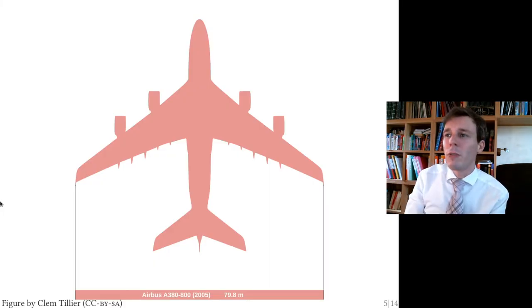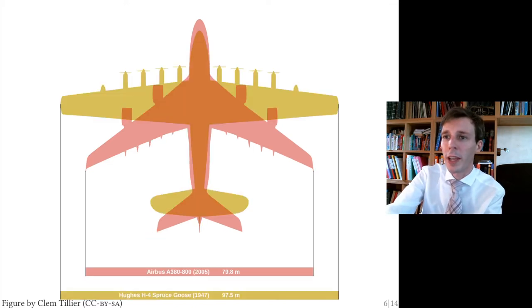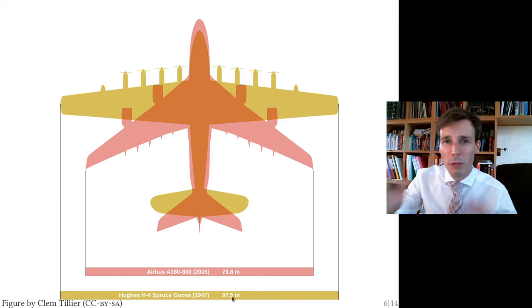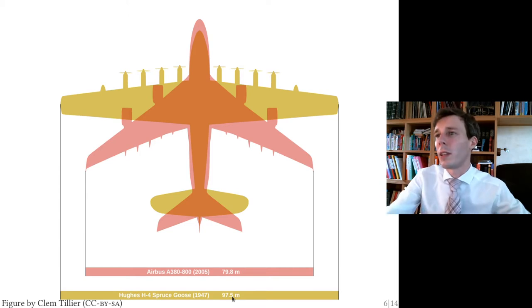This here is the plan view of the Airbus 380, which is the largest passenger airplane you can fly in today. This is typically what you would fly in when you fly across the Atlantic or the Pacific with a relatively large airline. And what you would fly in today, and superimposed into this, is the Spruce Goose, which is larger. Spruce Goose 1947 is almost 100 meters wide in length.